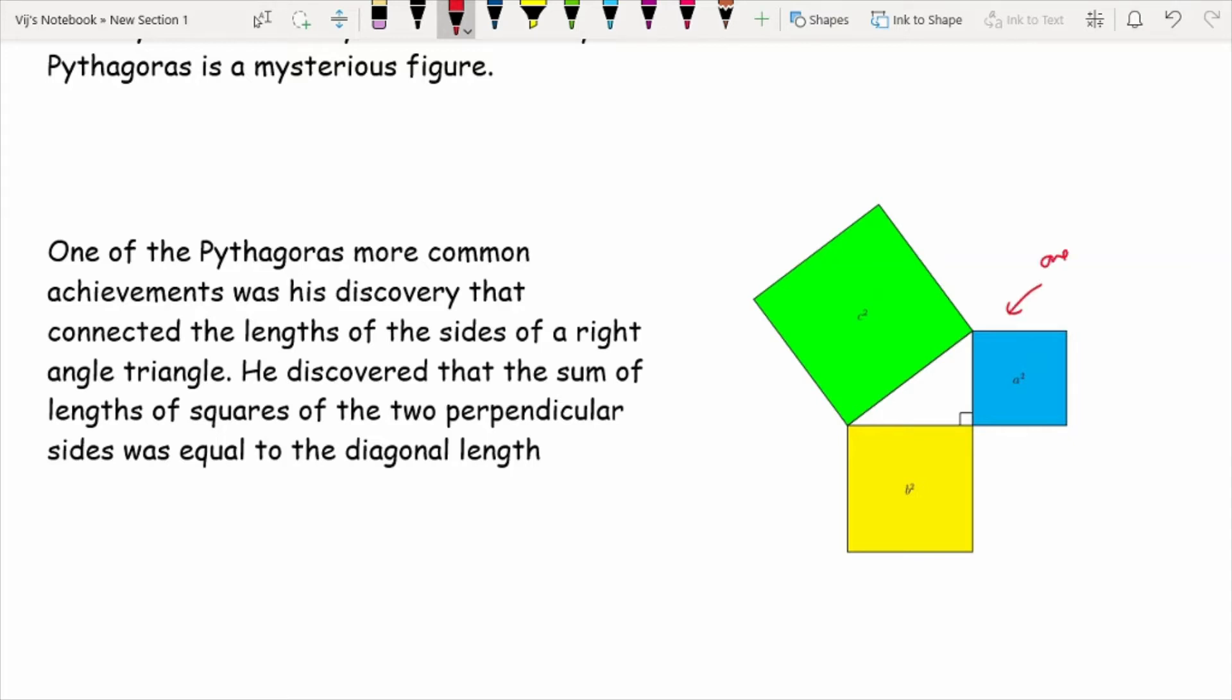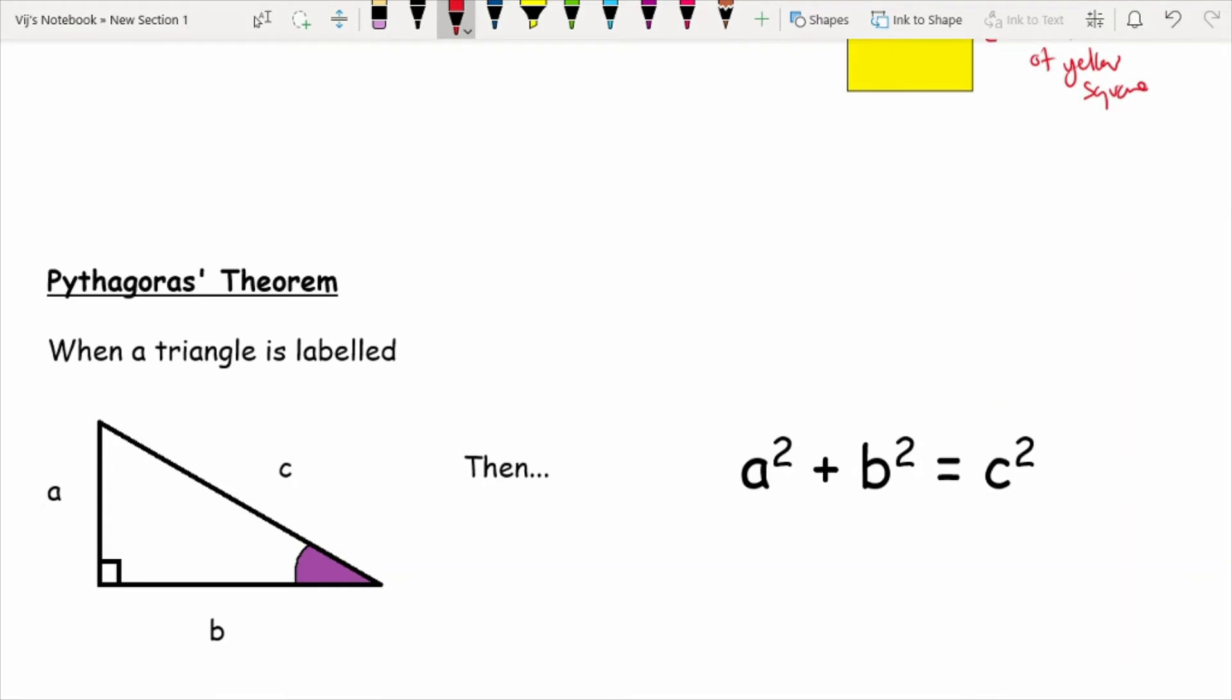Which is quite fascinating when you see this. And in any right-angled triangle you draw, if you were to replicate this diagram, you would also find that to be true. Now moving on to what Pythagoras' theorem actually is,